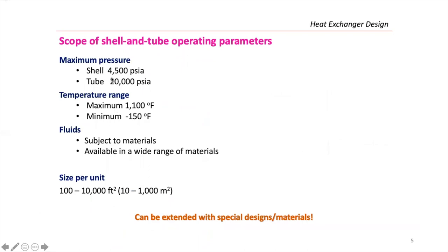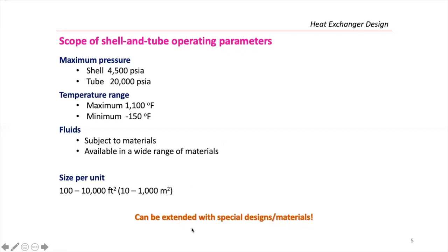Typical operating parameters for shell-and-tube heat exchangers: maximum pressure in the shell around 4,500 psia, tube side up to 20,000 psi. Temperature range from −150°F to 1,100°F. A wide variety of fluids can be used, with material selection depending on the fluid type. Unit sizes range up to 2,000 m². These parameters can be extended with special designs and materials — this is just to give you an idea.